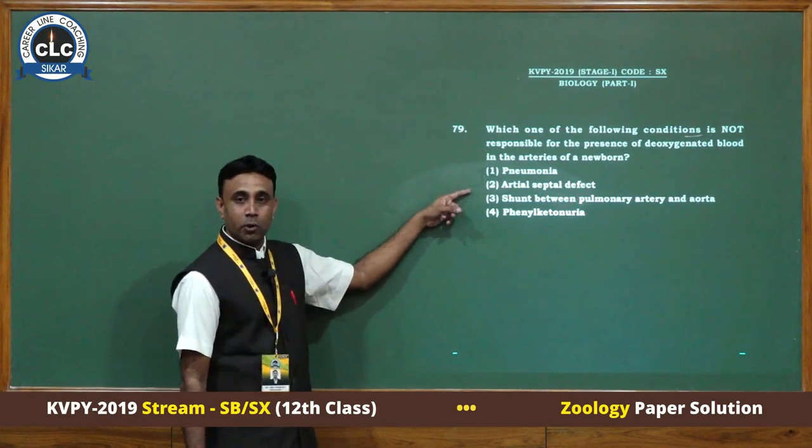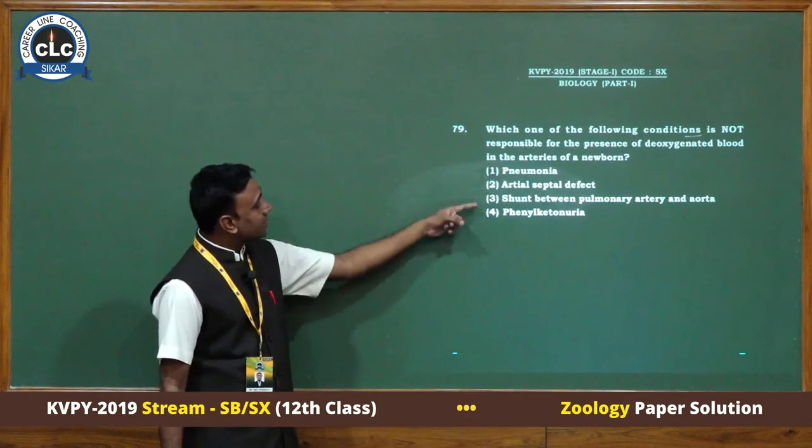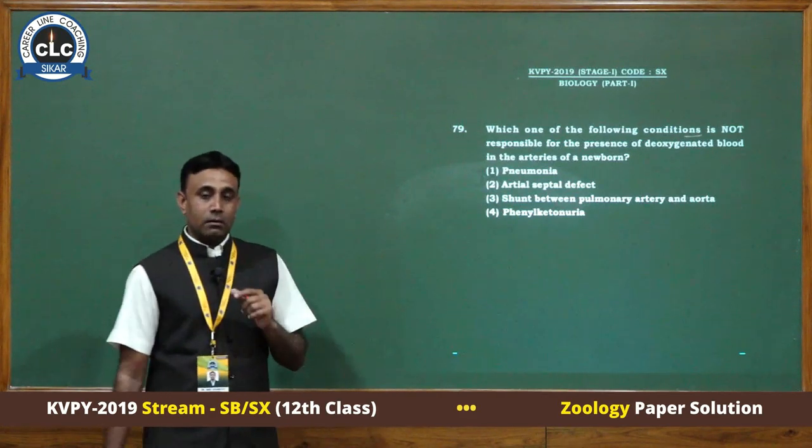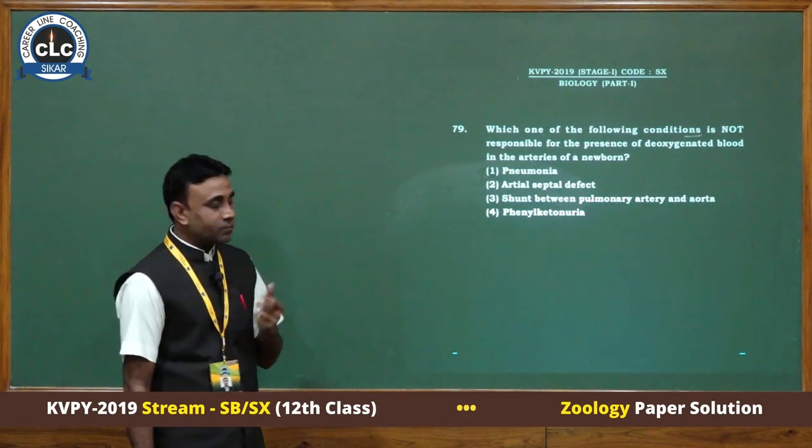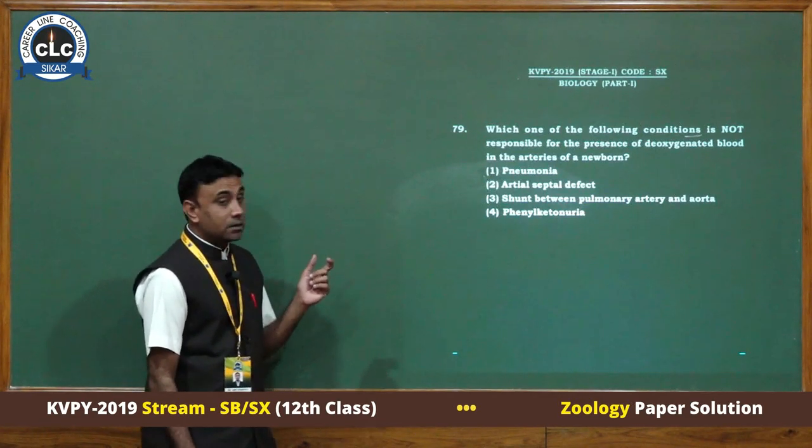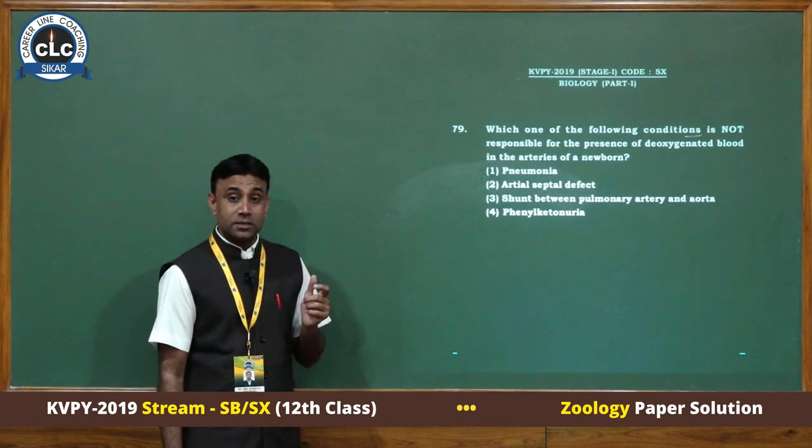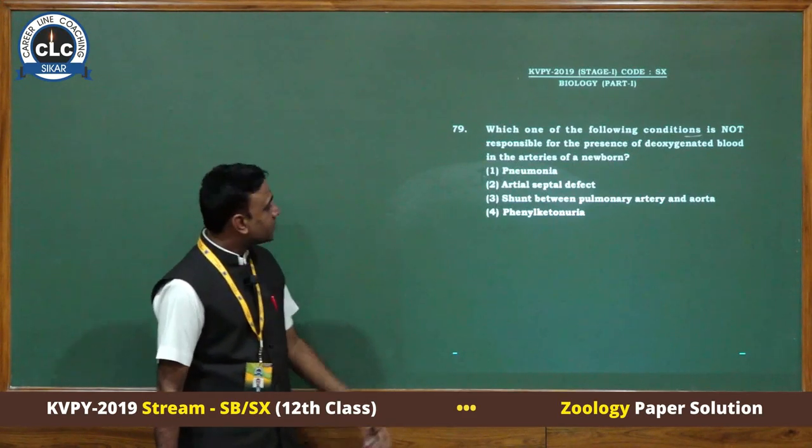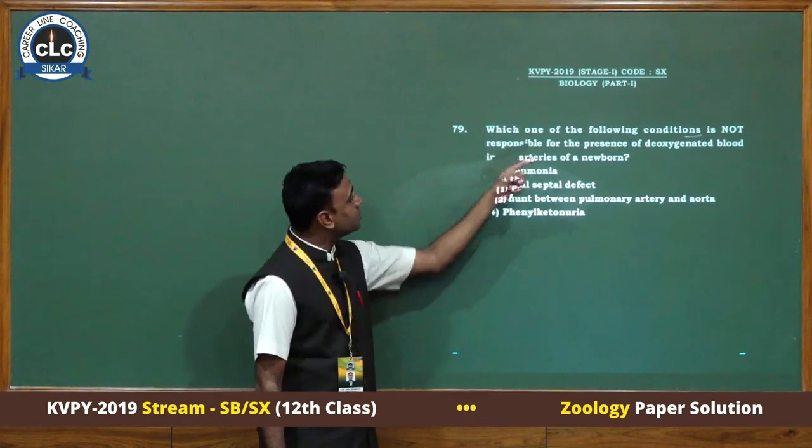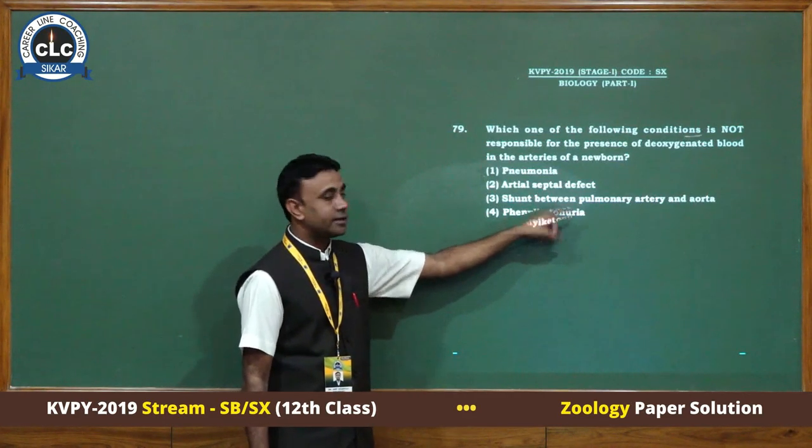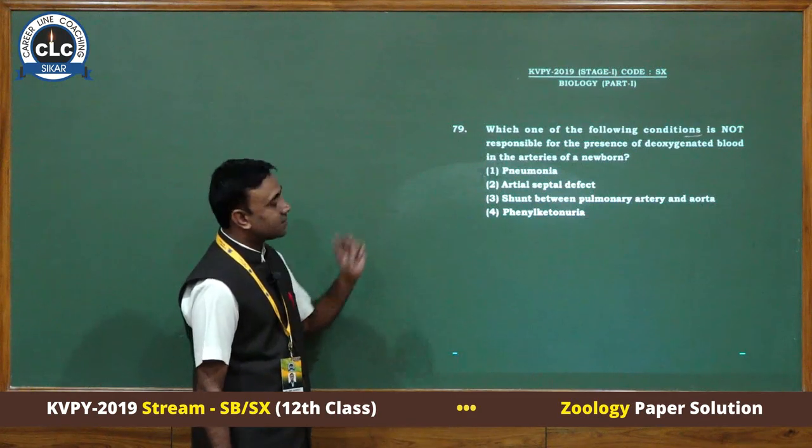There's also a shunt between pulmonary artery and aorta. The arch of aorta and pulmonary artery are interconnected by ligamentum arteriosus which also mixes pure and impure blood. But phenylketonuria is a genetic disorder related to the excretory system, so the answer is 4.